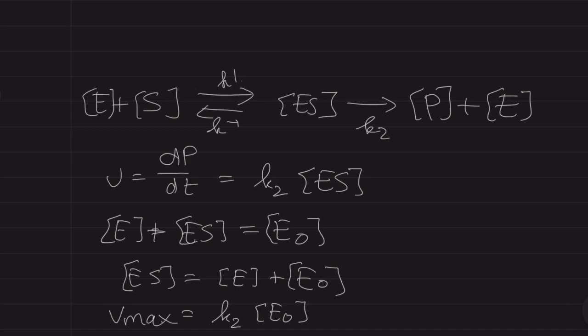So now we have an expression for ES. Remember we have to go back to the equation where we say that dP/dt is equal to K2 times ES. And we also need to remember that the Vmax was equal to K2 times E0.